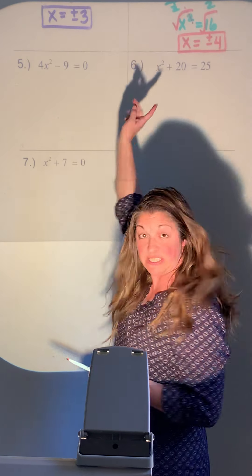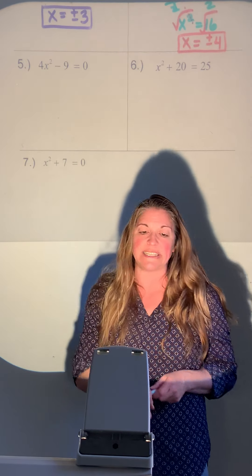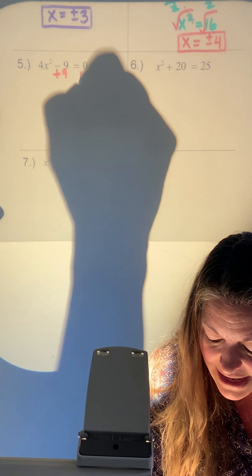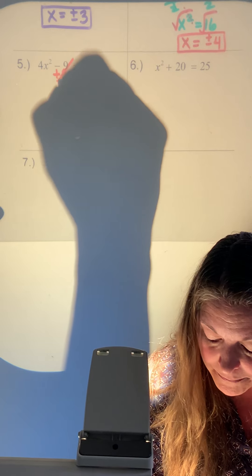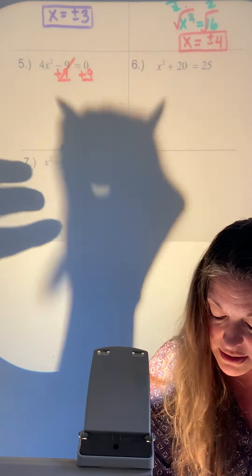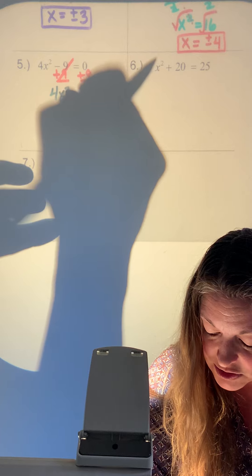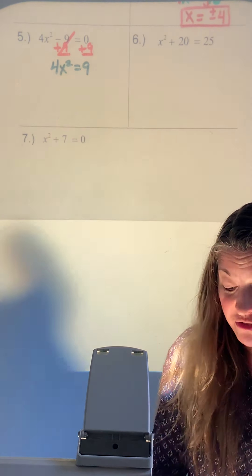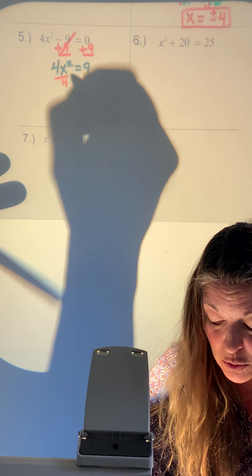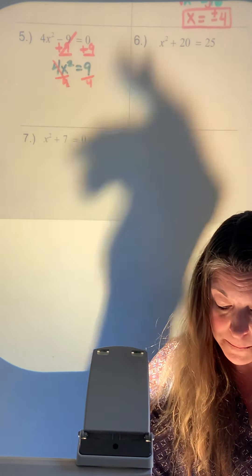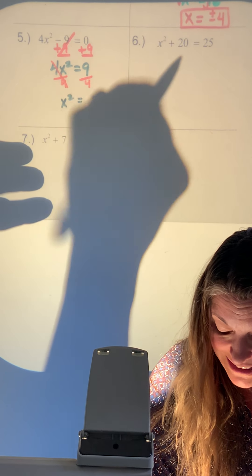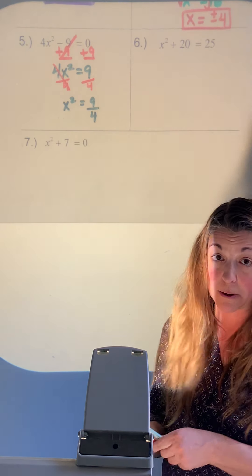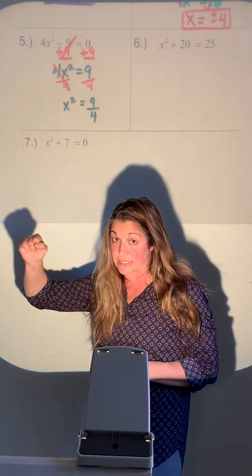I see minus 9, so add it to the other side. That leaves 4x squared equals 9. I've got a coefficient of 4, so to undo that I divide both sides by 4.